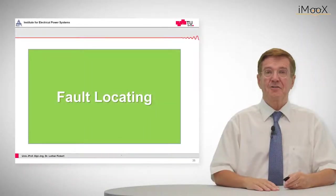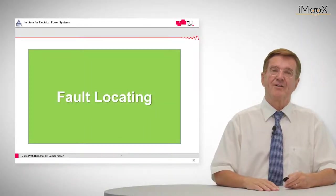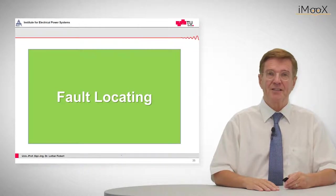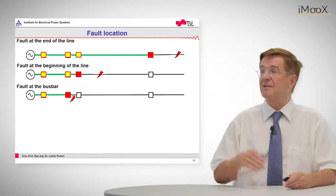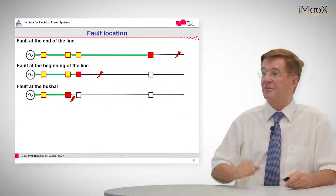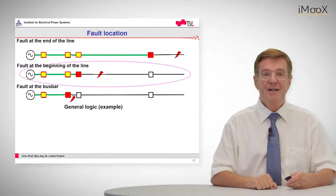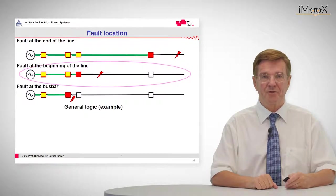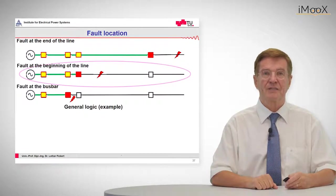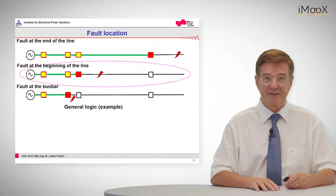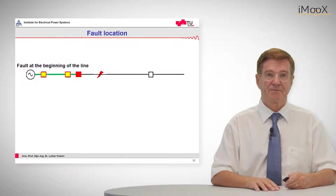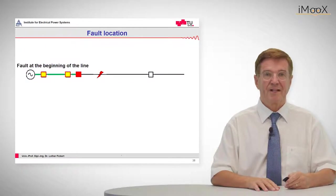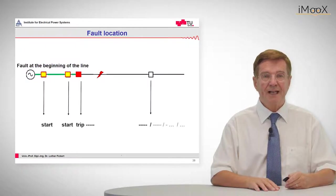In the second part of this lecture I will show you how the behavior of overcurrent protection can be used for fault locating. So here again we see the different fault positions and the reaction of the protection scheme. And we take now the medium fault as an example for the general logic how fault locating is carried out by means of overcurrent time protection.